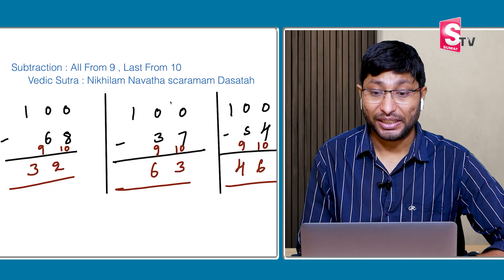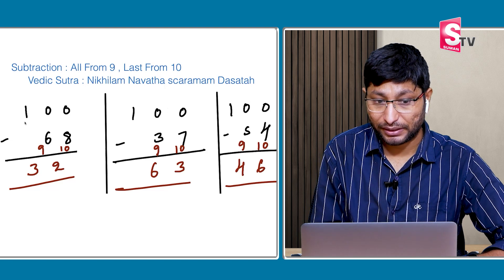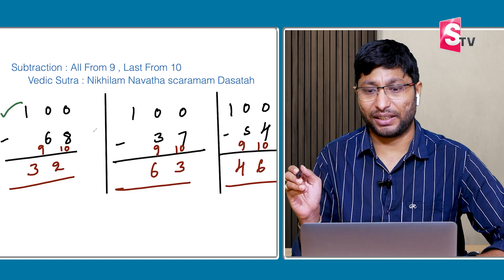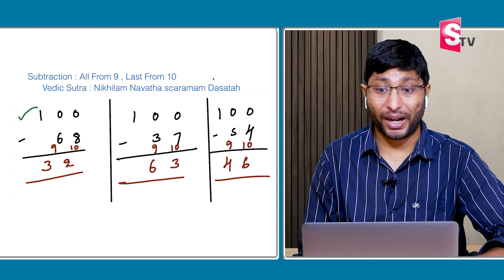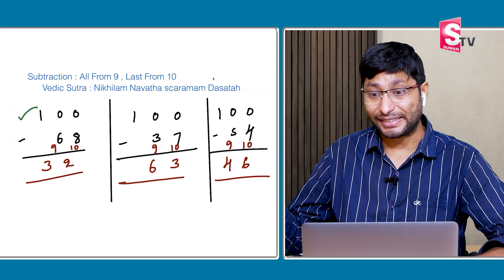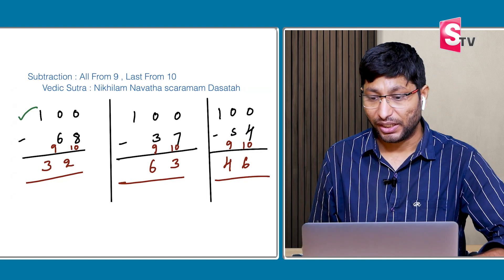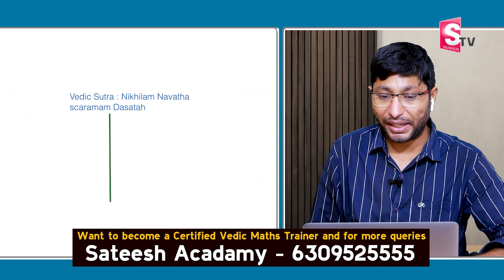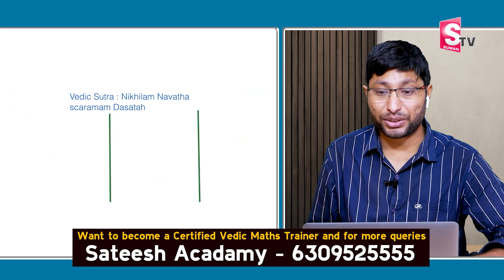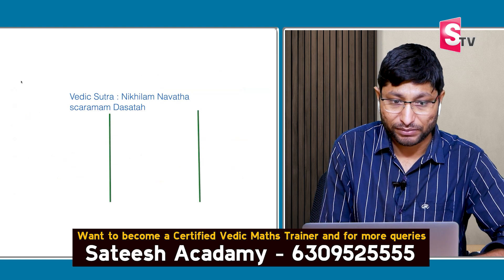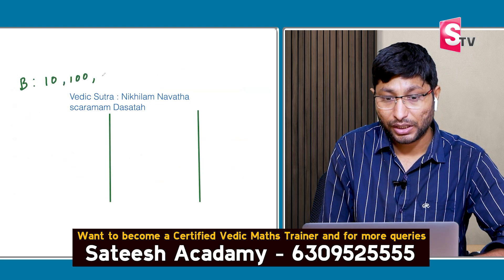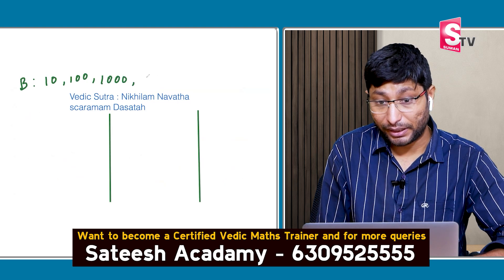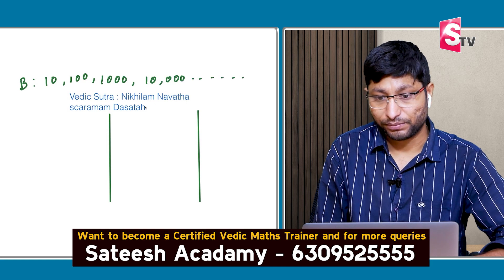This subtraction works only with numbers at the base. You can solve any such problem using this sutra. This is a basic sutra to understand in-depth multiplication and subtraction without borrowing. By the end of this video, you will understand how simply you can do subtraction using the base — which is nothing but 10, 100, 1000, 10,000, and so on.